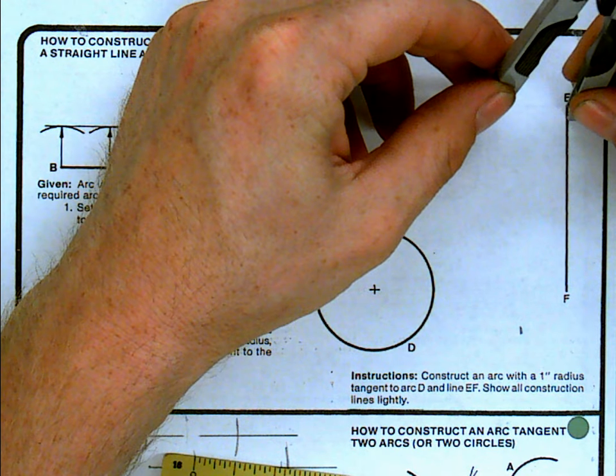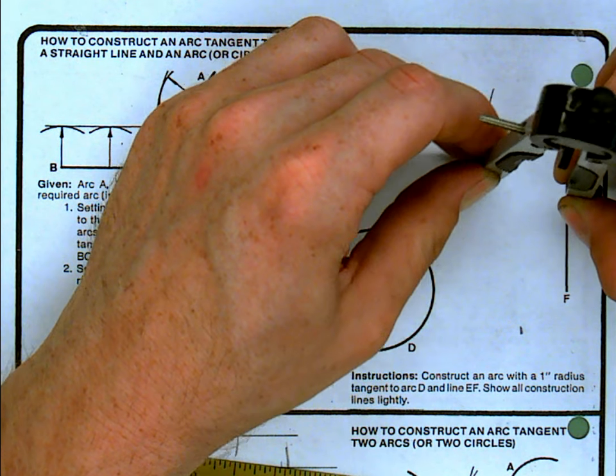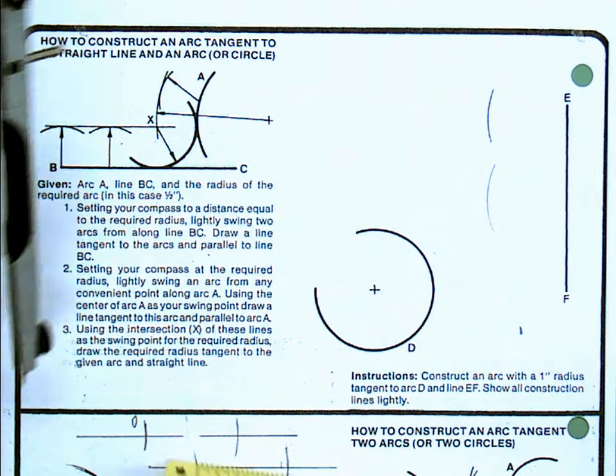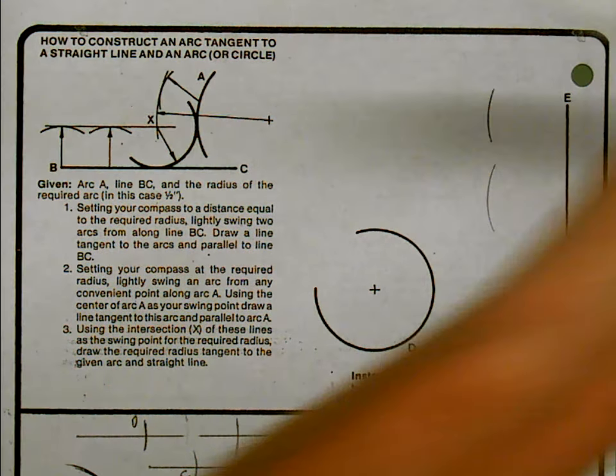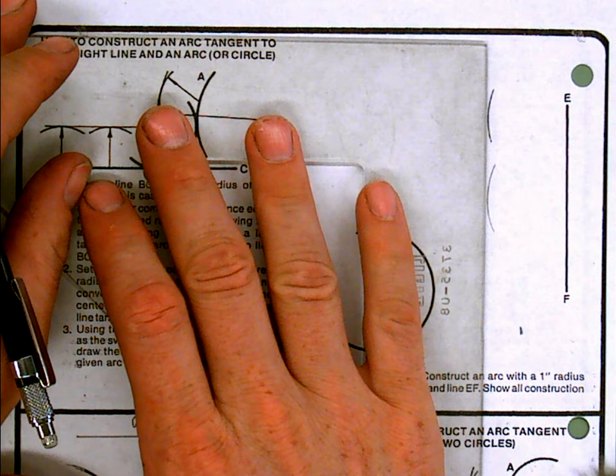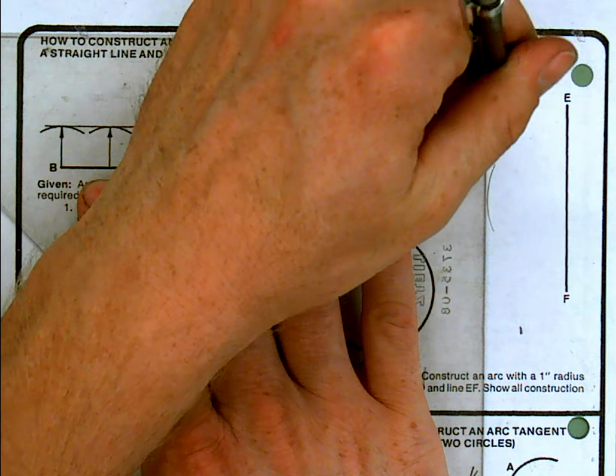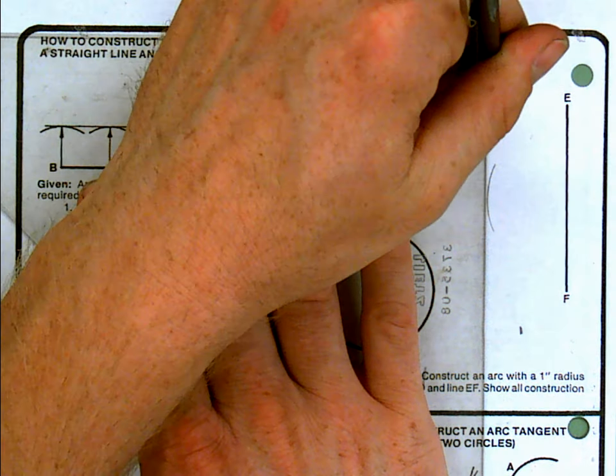Then we just pick two points on the line, make some nice arcs like that, and then we have something to reference to make a parallel line that is exactly one inch away from line EF. Seems to be pretty good.